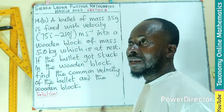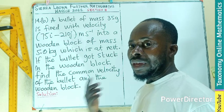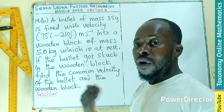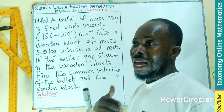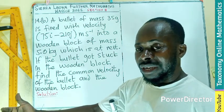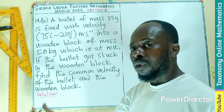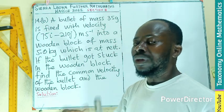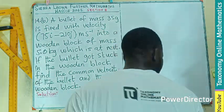Remember, this is a momentum problem where we are going to look at the law of conservation of momentum. That is, the momentum before a collision is the same as the momentum after collision. So initial momentum equals final momentum.